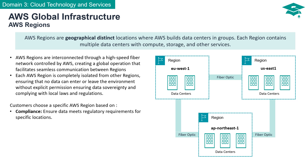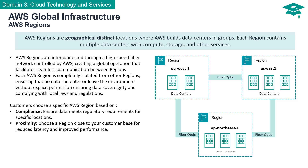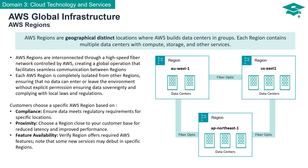Selecting an AWS region is a pivotal decision. Customers have several key factors to consider. Compliance: ensure your data adheres to specific regulatory requirements by choosing the right region. Proximity: opt for a region in close proximity to your user base — reduced latency and enhanced performance can significantly impact user experience. Feature availability: verify that the region provides the AWS services you need, as some new services might be introduced in specific regions first.